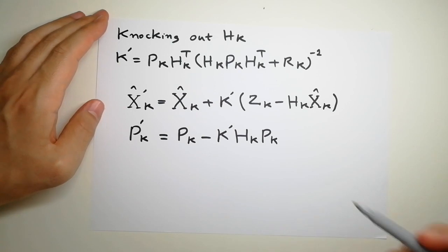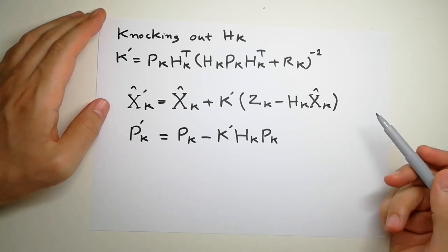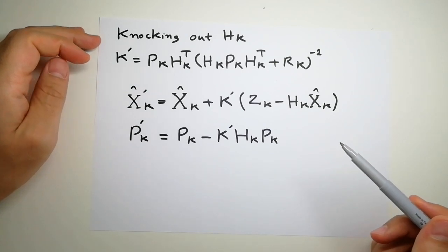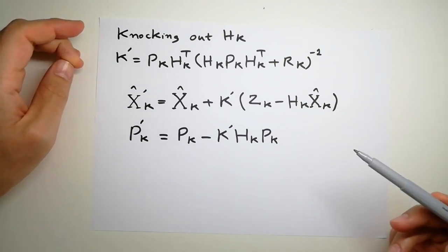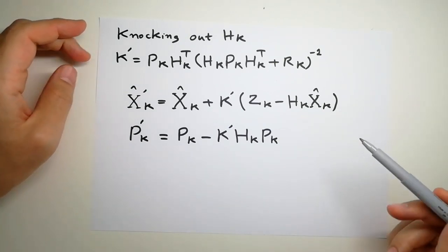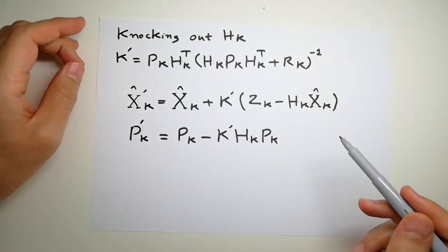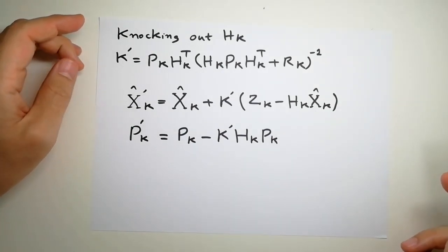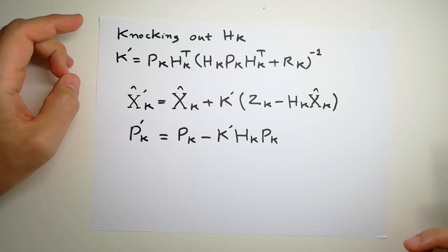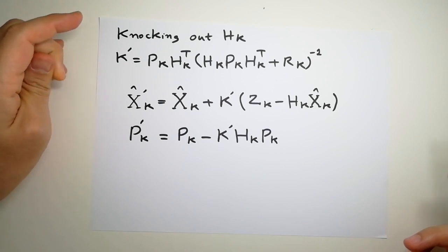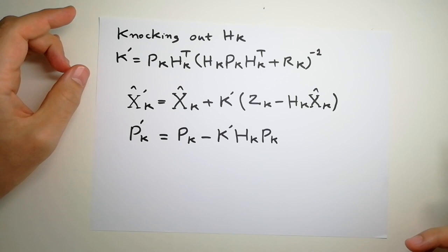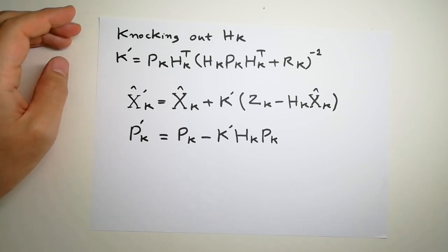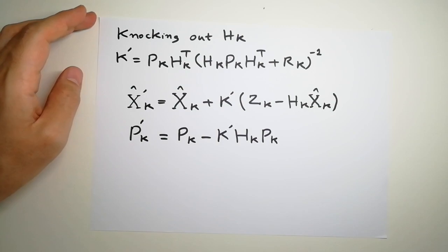We then use this new mean and covariance as input to the next prediction step, and so the loop continues. Please have a look at the Python implementation, and if you have any questions just ask. Thank you and have a good day.